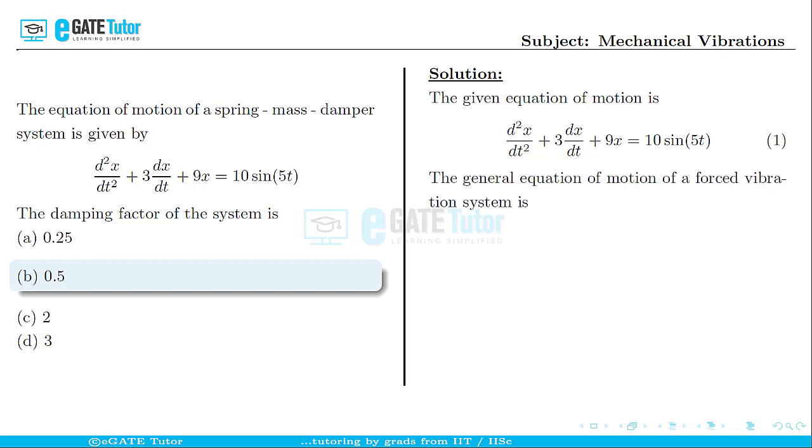We know that the general equation of motion for any forced system of vibration is mẍ + cẋ + kx = F₀sin(ωt).